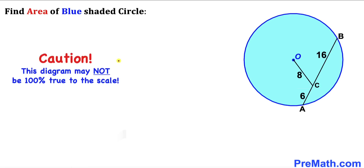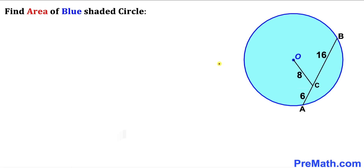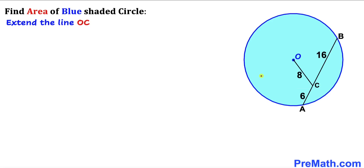Please keep in mind that this figure may not be 100% true to scale. Let's get started with the solution. Since our task is to calculate the area of this blue shaded circle, our very first step is to calculate the radius, which we'll call lowercase r. We are going to think outside the box and extend line OC.